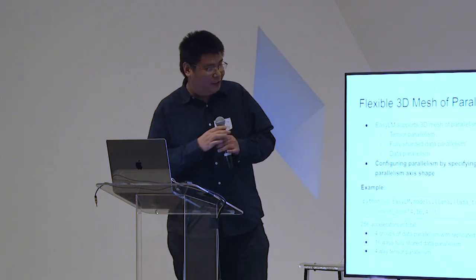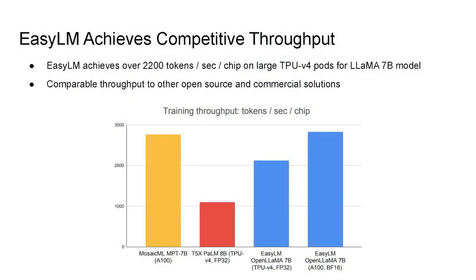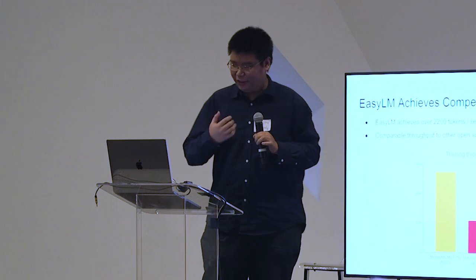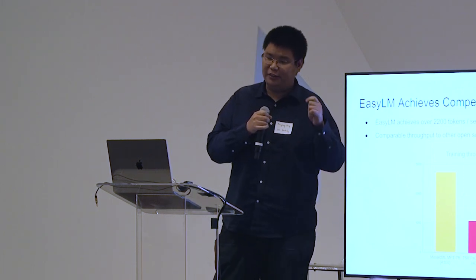With all these simple programs to set up, how does it perform? It actually performs decently compared to both existing open source implementations and commercial solutions. Here's a comparison of our throughput in training our 7 billion OpenLLaMA model. On A100s, we achieved comparable throughput to Mosaic's MPT-7b model, which is a very popular commercial solution acquired by Databricks. We're also doing better on TPU than Google's T5X open source solution, which is a much more complicated implementation — better for larger models, but not so good for these smaller models.